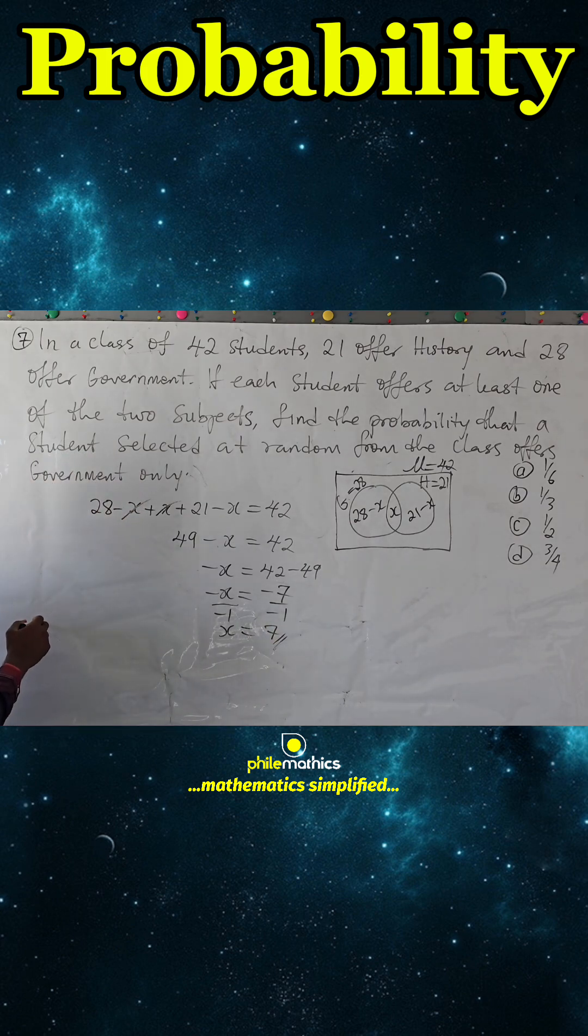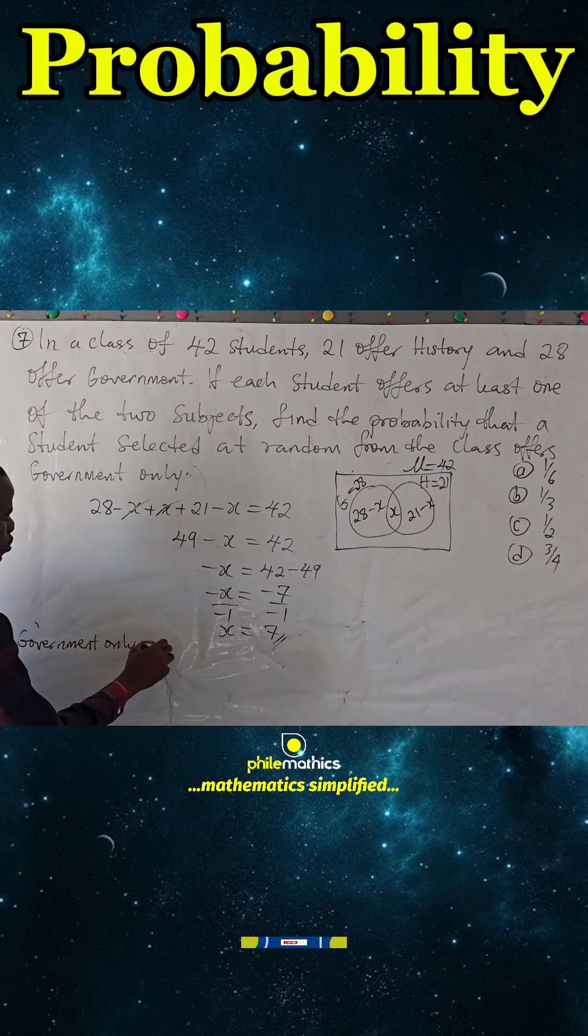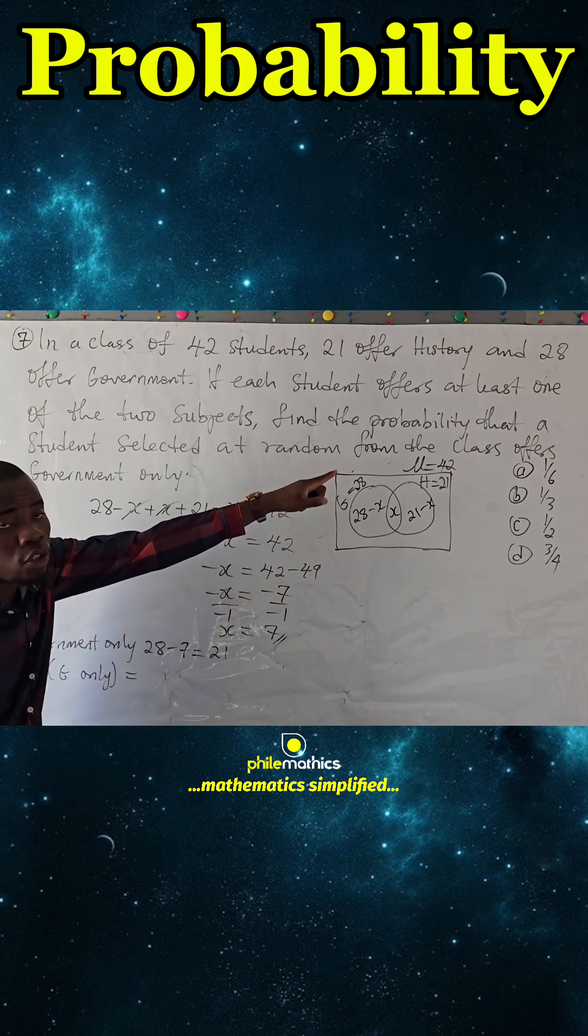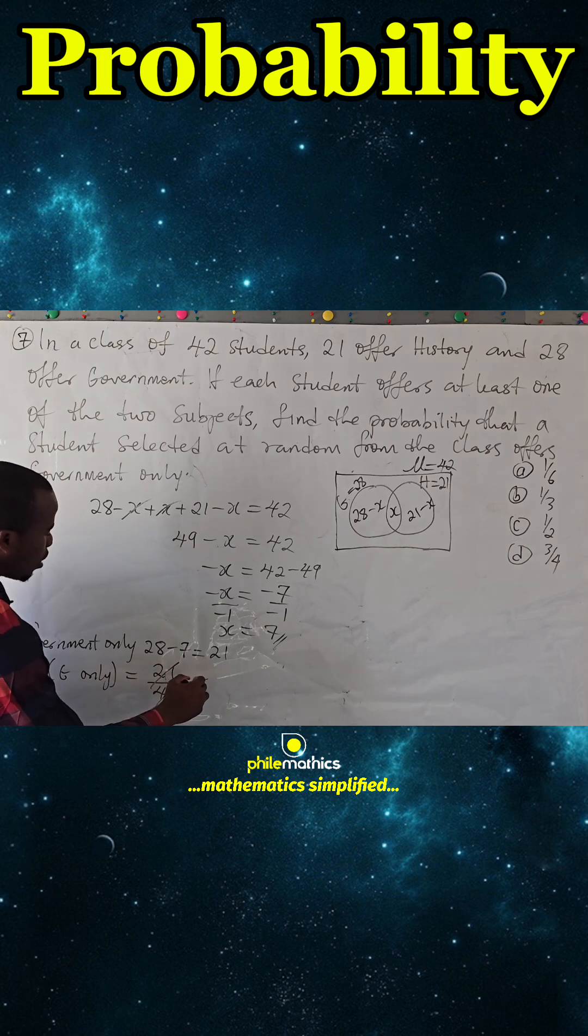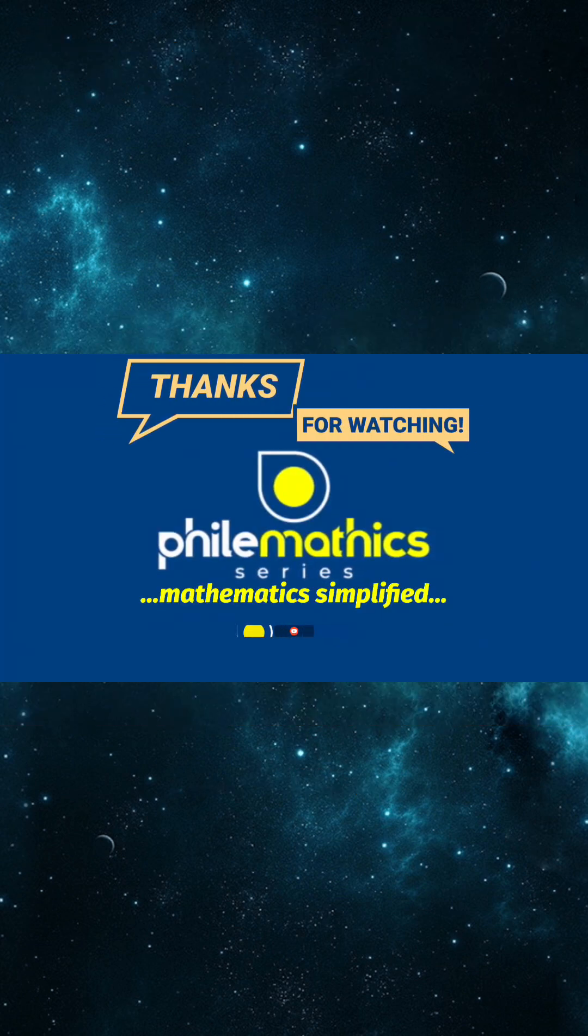Those that studied Government only will simply be 28 minus 7, which is 21. And so, the probability of those that studied Government only will be those that studied Government only over the total number of students in the class - 21 over 42. And this simplifies to 1 over 2.